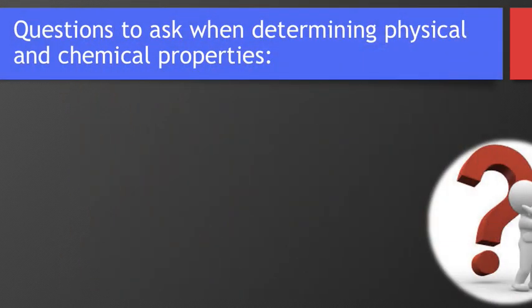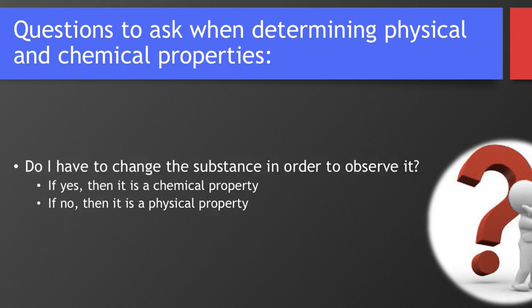So overall questions to ask when determining physical and chemical properties. Do I have to change the substance in order to observe it? In other words, do I have to change it from what it chemically is? If yeah, then it's a chemical property. If no, you don't have to, then it's a physical property.